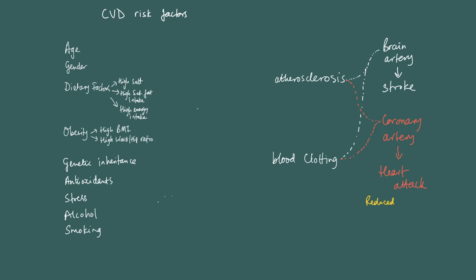These are the risk factors, and what we should understand right from the beginning is that all these risk factors basically increase the chance of either atherosclerosis or blood clotting occurring. If one of these two things happens in an artery in the brain, it's going to result in what we would term a stroke — many cells in the brain have a reduced blood supply, causing a perturbation to brain function.